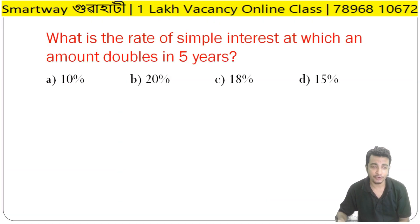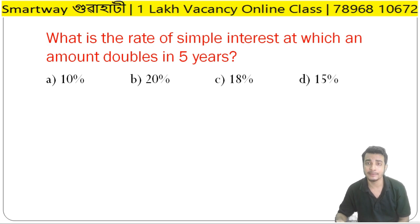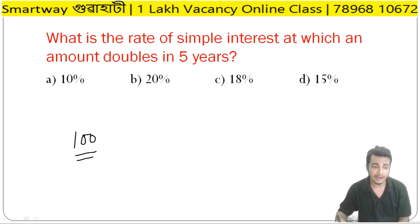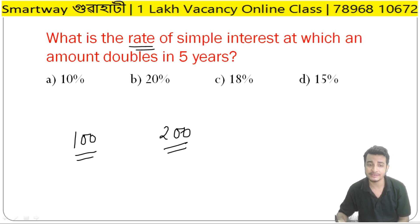Next question: what is the rate of simple interest at which an amount doubles in five years? Rate kimaan hoi — if the amount doubles, for example, a photo, the key man rate, a positive double.